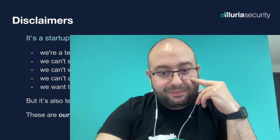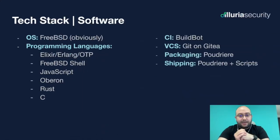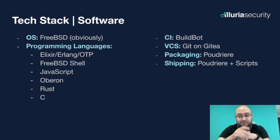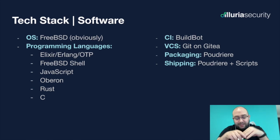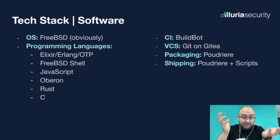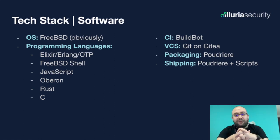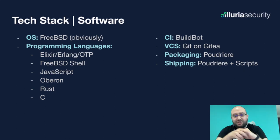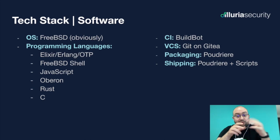Here's the list of our tech stack. On the software side, of course we use FreeBSD. We write a lot of Elixir and Erlang OTP, a lot of FreeBSD shellcode, JavaScript for the front-end, Oberon — a very minimalistic programming language — and some components in Rust as well as C. For continuous integration we use BuildBot, which is more like a meta-framework for building your own CI system. Keep in mind you could be using GitHub Actions or GitLab CI. For version control, we're using Git on Gitea. On the FreeBSD side, we use Poudriere to package our software and a bunch of scripts for shipping.